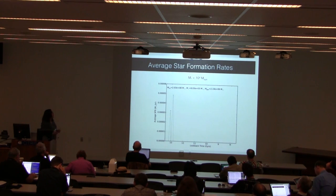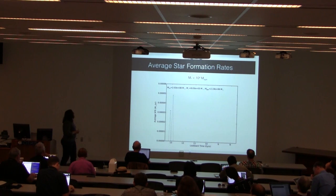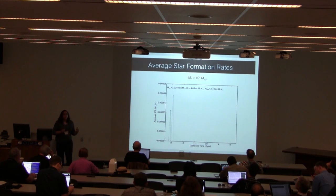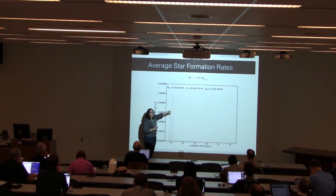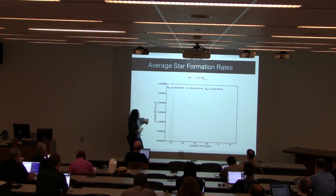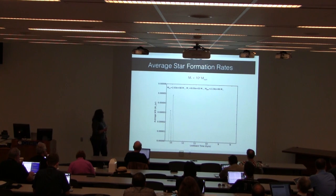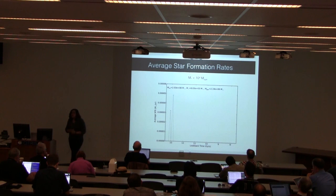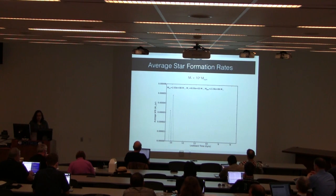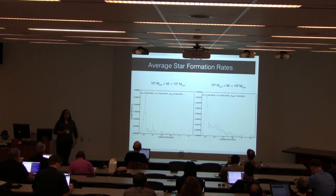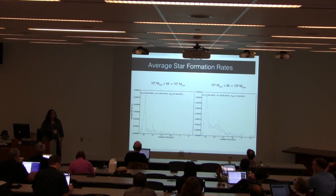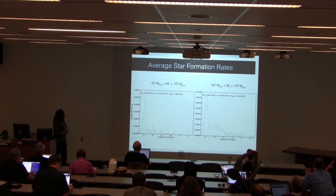To understand how these galaxies built up their stellar mass over time, we look at their average star formation histories. For the lowest stellar mass bin — galaxies with stellar mass less than 10^4 solar masses — the average star formation rate ends after reionization; these galaxies are extremely low stellar mass and their star formation is quickly truncated. For all other galaxies with more reasonable stellar masses, they have more extended star formation histories. This tells us that we don't find many fossils of reionization, and that reionization doesn't completely quench our galaxies even at low halo masses.